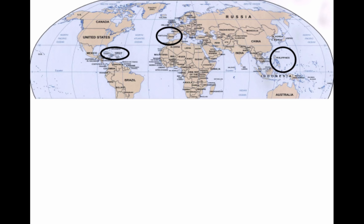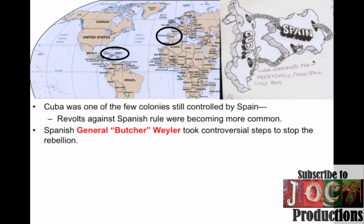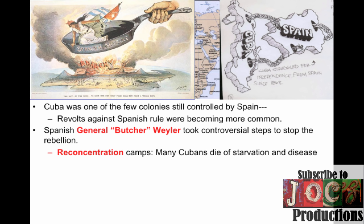The big event you should know about is the Spanish-American War. Cuba was one of the few colonies still controlled by Spain. Revolts against Spanish rule were becoming more and more common — people like José Martí wanted independence — and Spain was sending in large numbers of troops. Spanish general Butcher Weyler, nicknamed 'The Butcher,' instituted a policy of reconcentration camps where Cubans were forced into camps, and many died of starvation and disease.